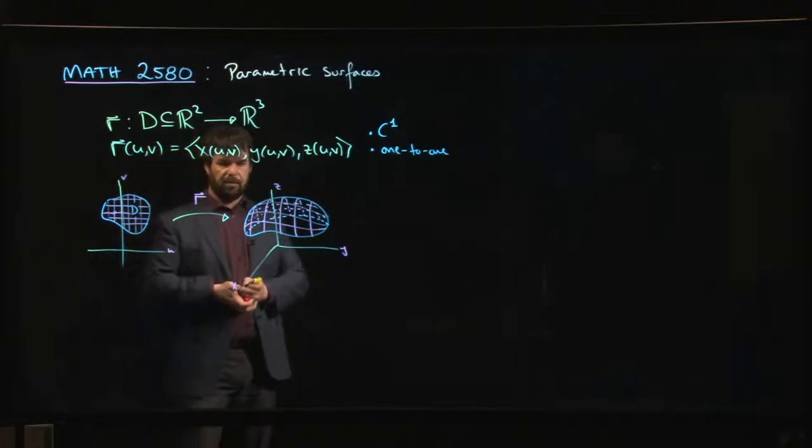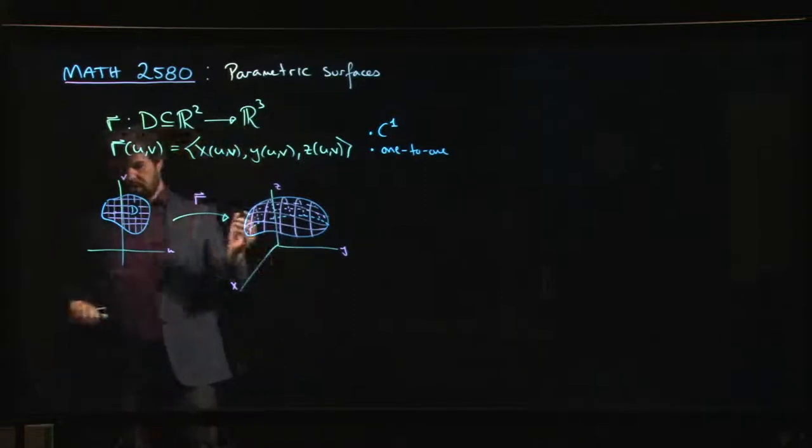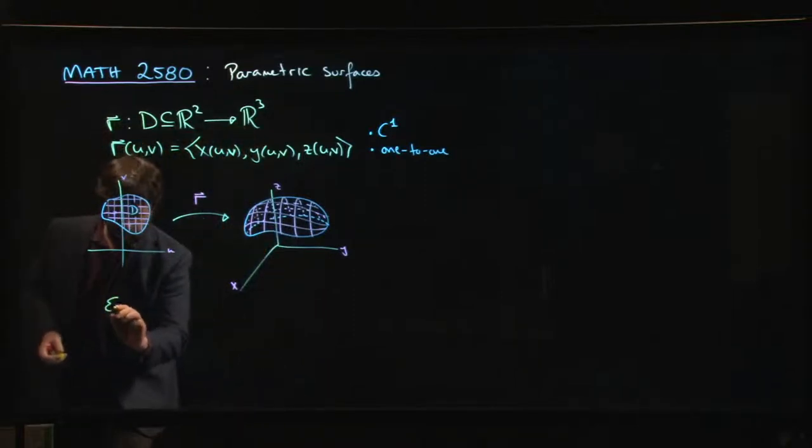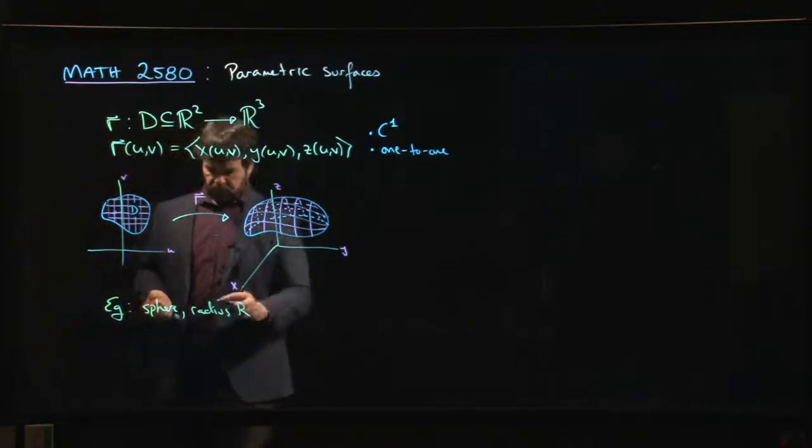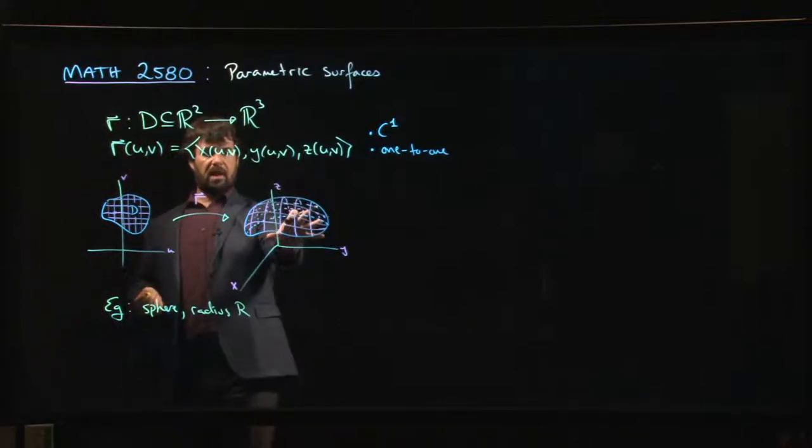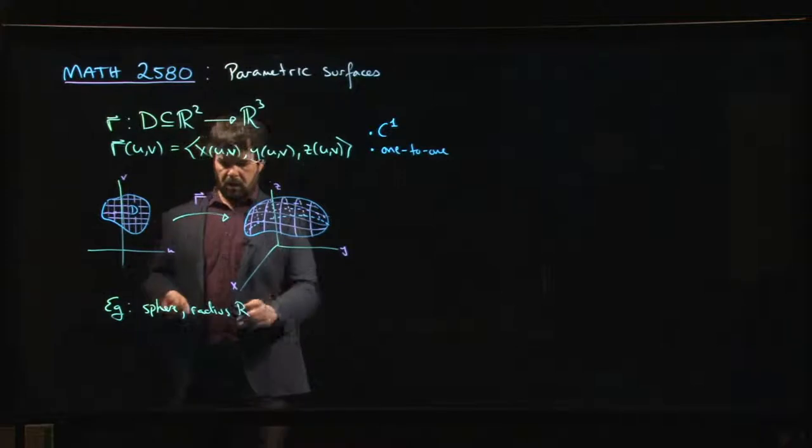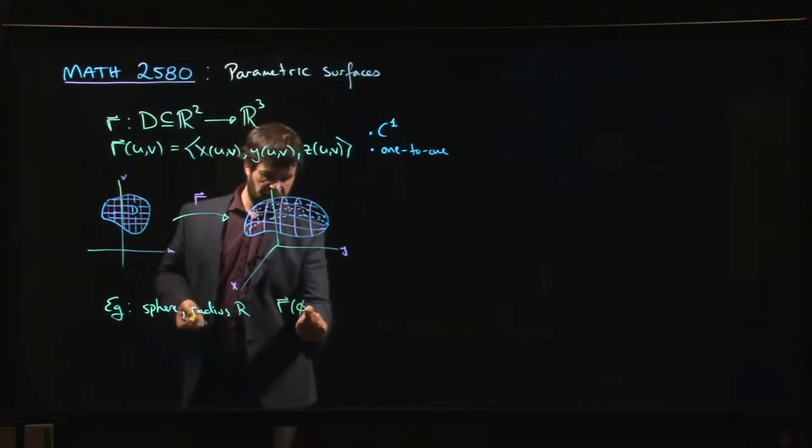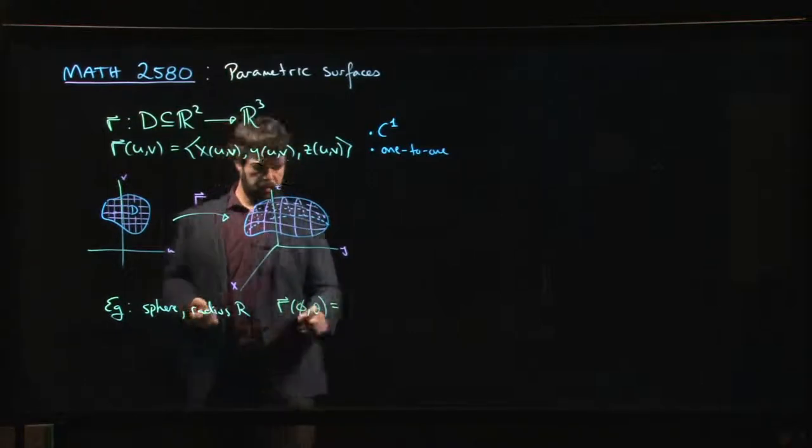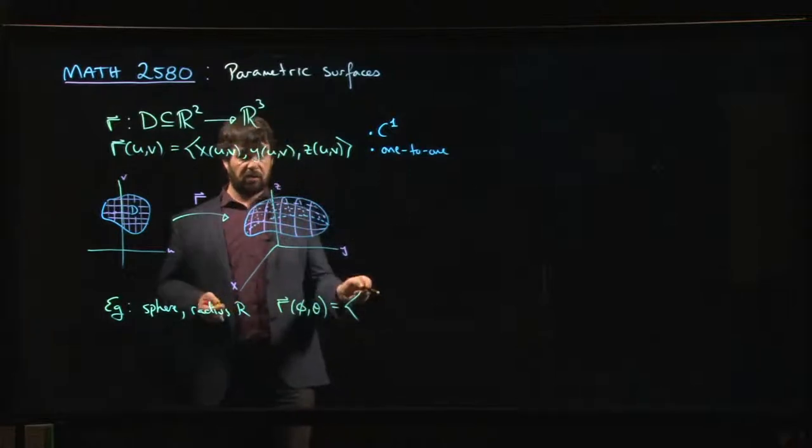For a couple of quick examples, I could do something like a sphere of radius r. We know that there is a natural coordinate grid on the sphere coming from spherical coordinate systems. So maybe we take φ and θ.